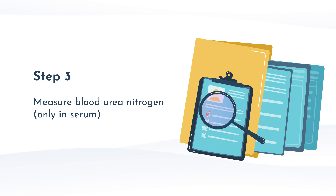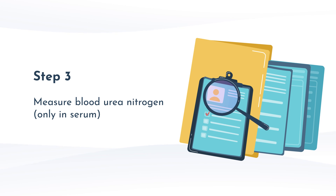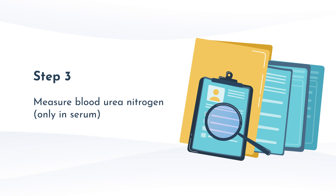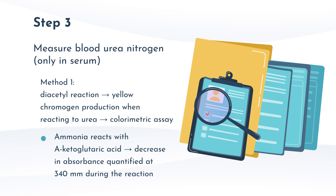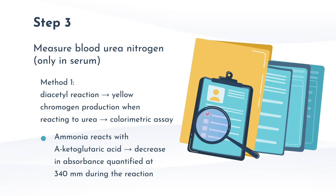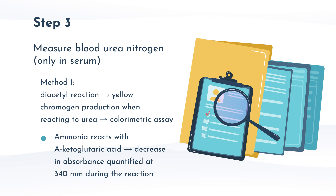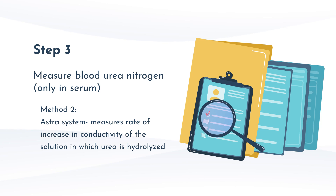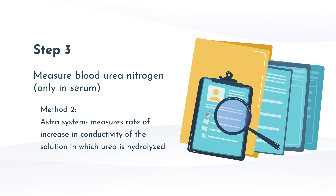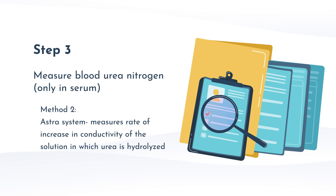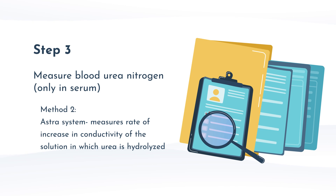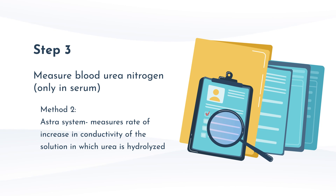When measuring blood urea nitrogen from serum in the lab, there are two different kits or reactions often used. The first is called the diacetyl reaction — the ammonia in the urea reacts with alpha-ketoglutaric acid and produces a yellow chromogen, which can then be read using a colorimetric assay. The second method is called the ASTRO system, where urea is hydrolyzed in solution and a change in conductivity — rather than color — is measured depending on the amount of urea present. Whichever method is used gives a BUN concentration in milligrams per deciliter.